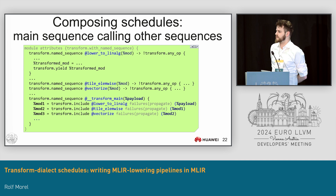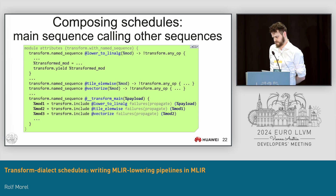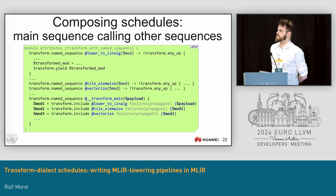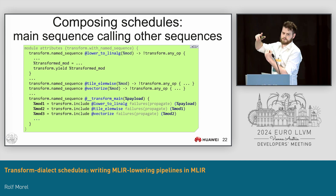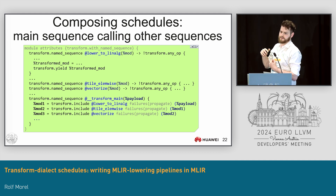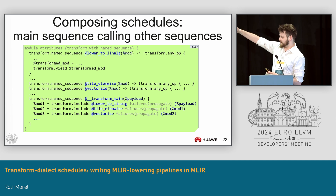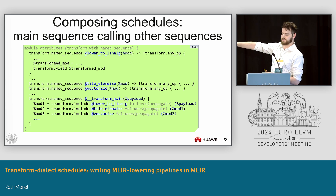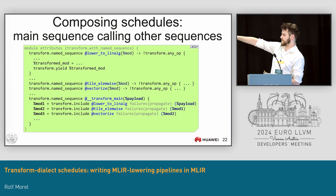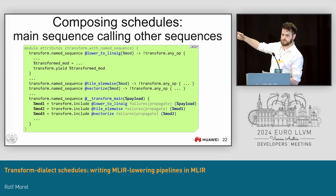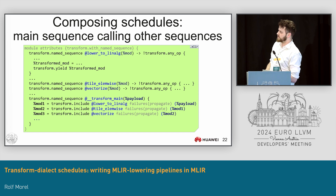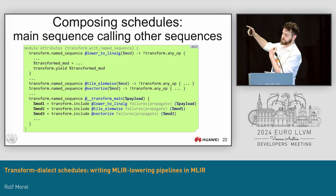Given that we can compose schedules through Include and NamedSequence, we can maintain the little schedules we had before but start calling them in sequence. We have the definitions of the little schedules coming first, and then a TransformMain — like the main function in C — which is the entry point the transform interpreter calls. This entry point calls the little schedules in turn, giving us the pipeline notion again where we iteratively transform the IR, all in one big schedule, whilst the small schedules remain contained within it.